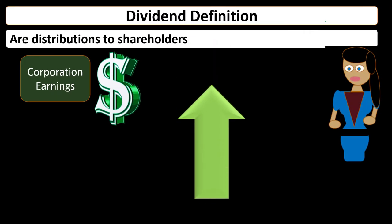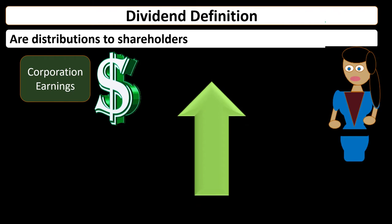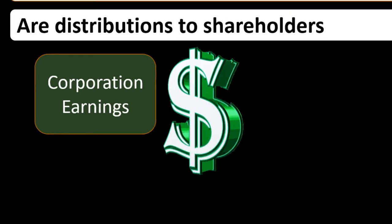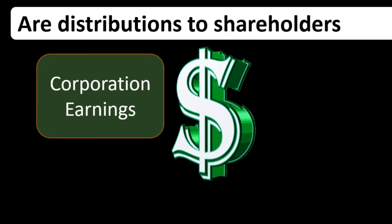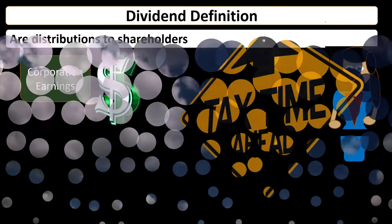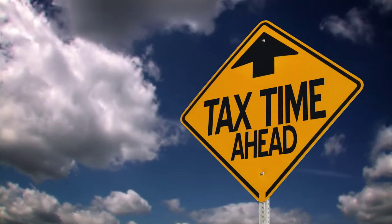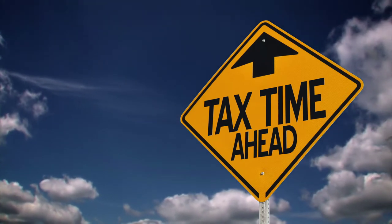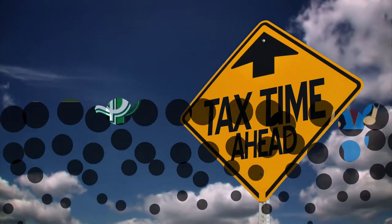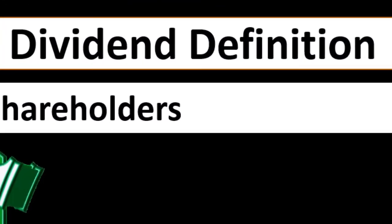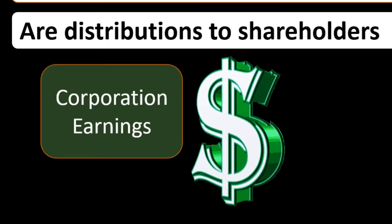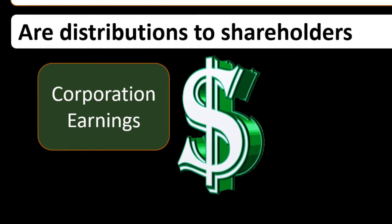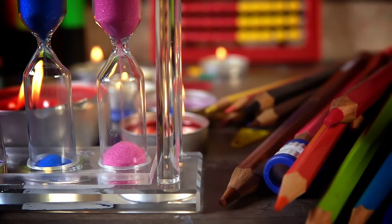Dividends is usually something you're going to get a statement for from a 1099-DIV, and it's usually fairly straightforward. But there are some interesting components, including whether or not you're going to have a different tax rate with regards to dividends. We can have two different basic types of dividends, and there's often arguments about double taxation. These are all things you're likely to get questions about from clients.